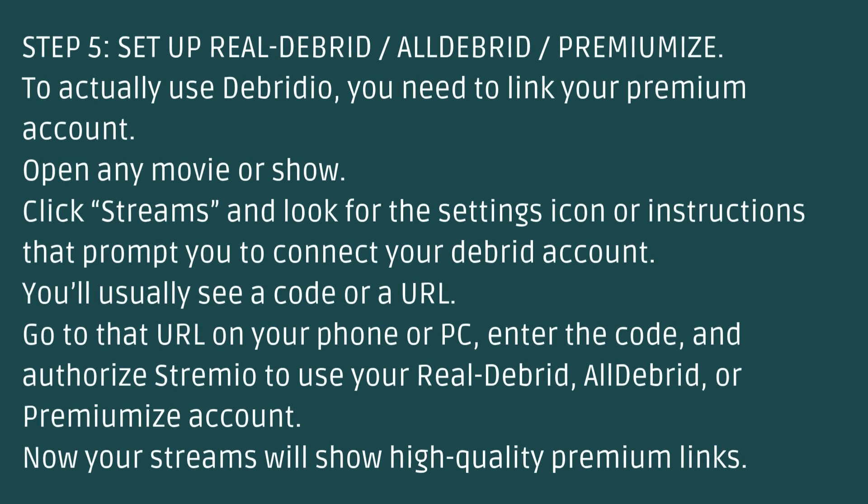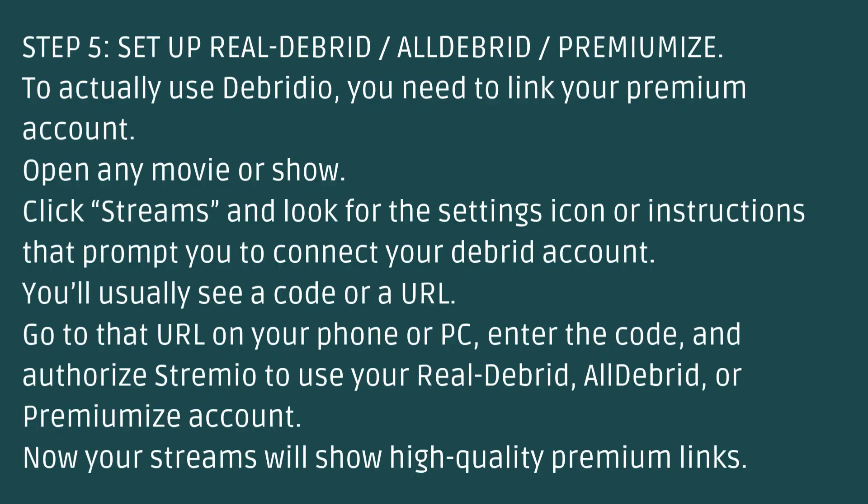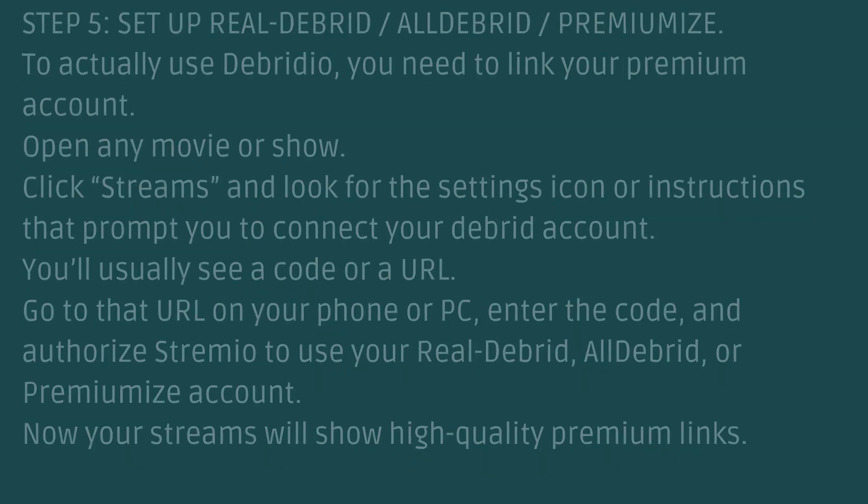Step 5: Set up RealDebrit, AllDebrit, or Premiumize. To actually use Debritio, you need to link your Premium account. Open any movie or show, click Streams, and look for the settings icon or instructions that prompt you to connect your Debrit account. You'll usually see a code or URL — go to that URL on your phone or PC, enter the code, and authorize Streamio to use your RealDebrit, AllDebrit, or Premiumize account. Now your streams will show high-quality Premium links.